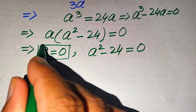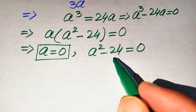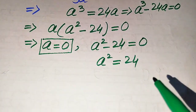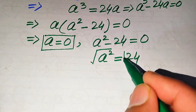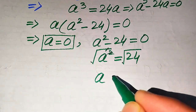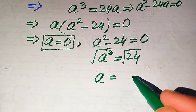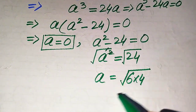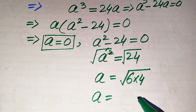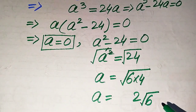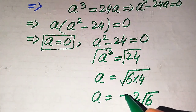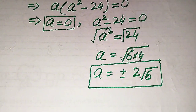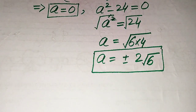The first root is a equals 0. For the second case, a squared minus 24 equals 0, so a squared equals 24. Taking the square root of both sides, a equals plus or minus the square root of 24. Writing 24 as 4 times 6, and since the square root of 4 is 2, we get a equals plus or minus 2 times the square root of 6.